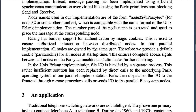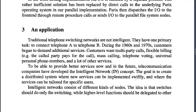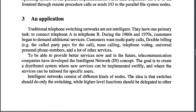In the Unix Erlang implementation, file I/O is owned by a separate process. This rather inefficient solution has been replaced by direct calls to the underlying Parix operating system in the parallel implementation. Parix then dispatches the I/O to the front end through remote procedure calls, or sends I/O to the parallel file system nodes.